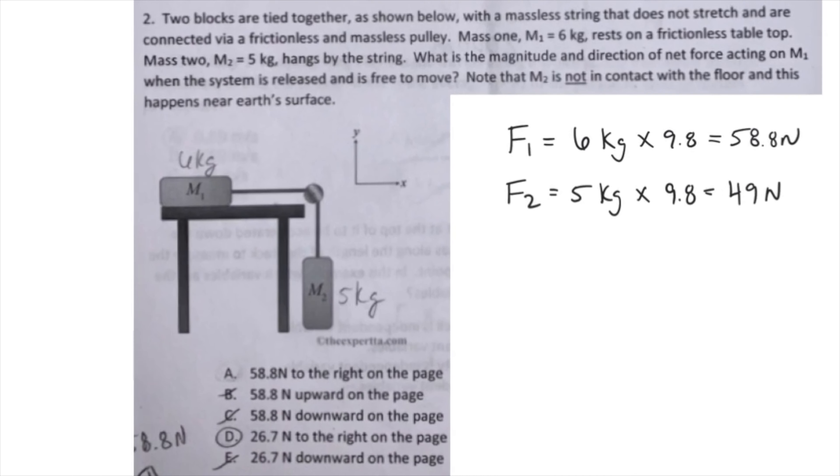Now intuitively, if you look at the answer choices, you can automatically eliminate B, C, and E. Since it's asking about the movement of M1, we know that if we release M2 and gravity pulls M2 down, M1 will move to the right on the page, which leaves us with options A and D.